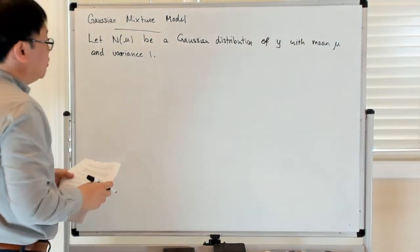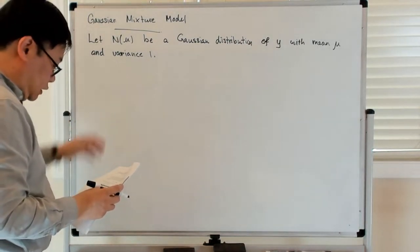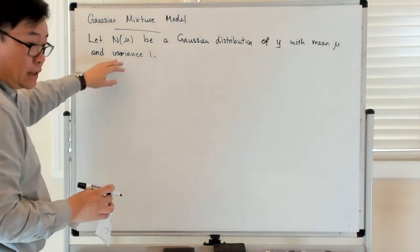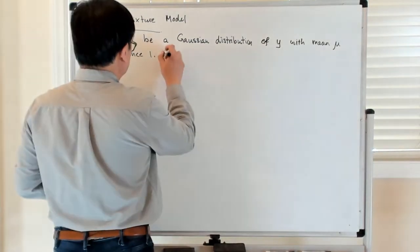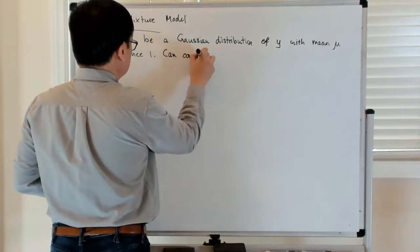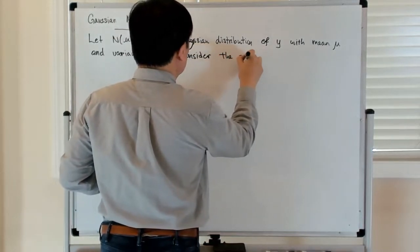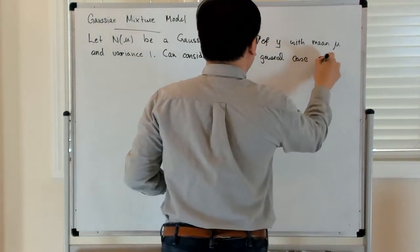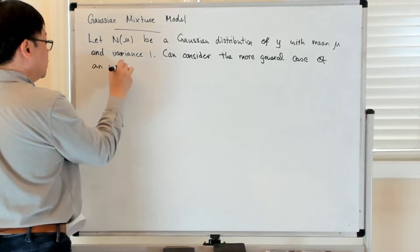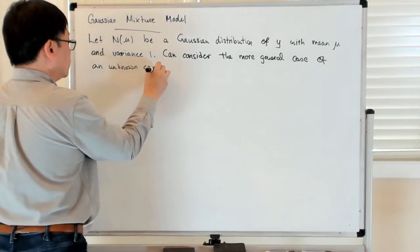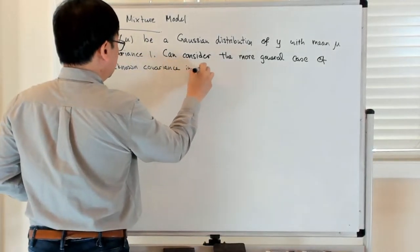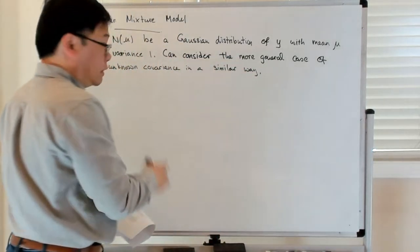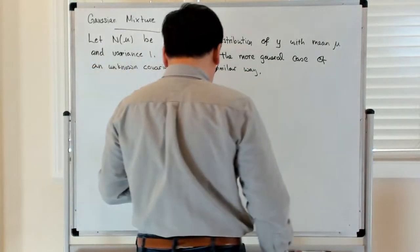We can consider the more general case of unknown covariance in a similar way, but we're just going to look at this simple example for illustration. The Gaussian mixture model is a mixture of k Gaussian distributions with different means, but we consider a simplified case just for illustration.